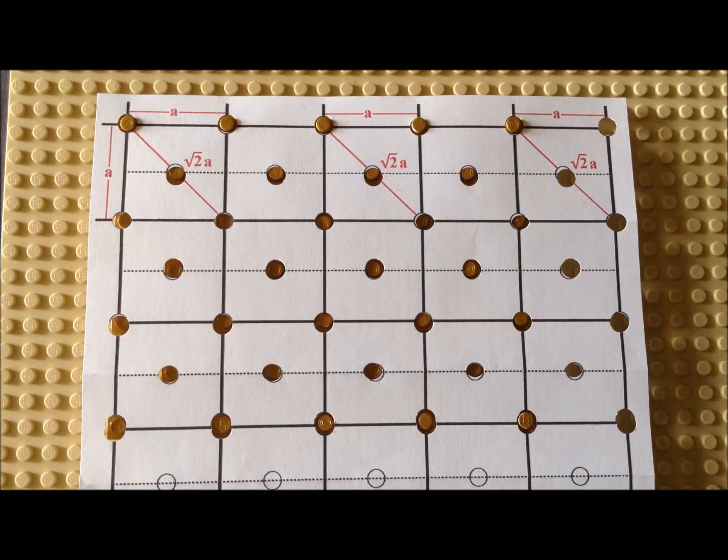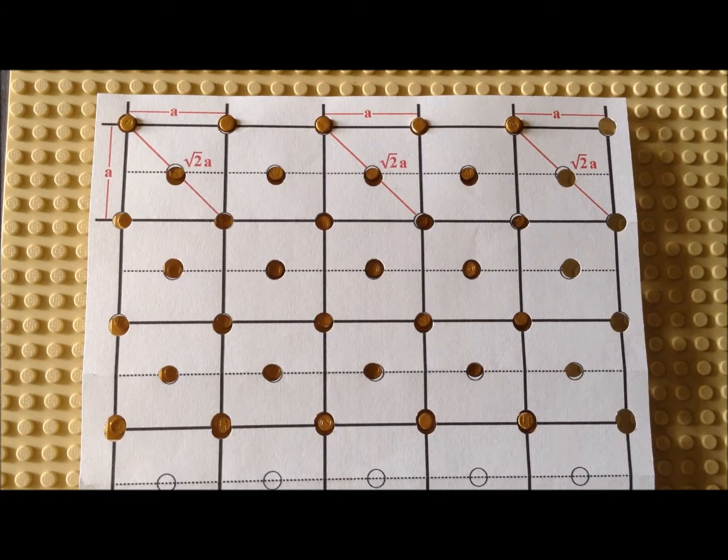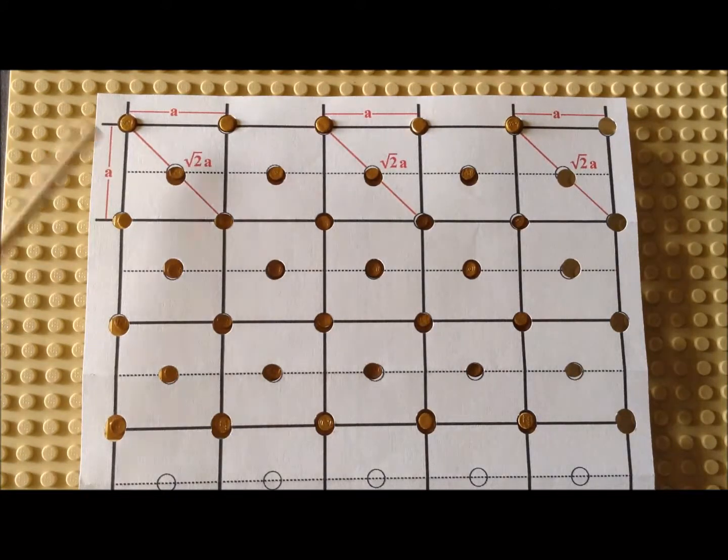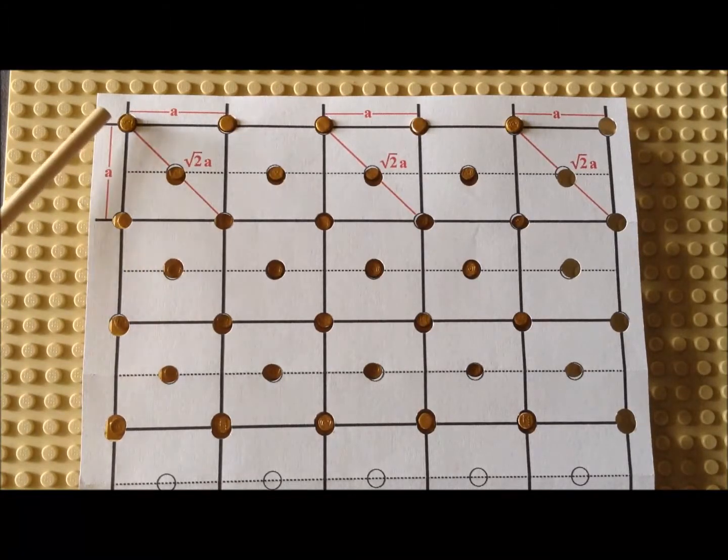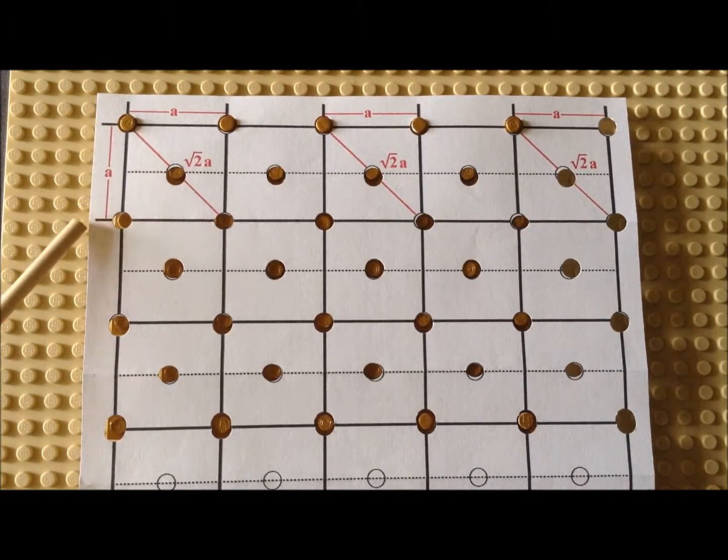Here we have figure 7, pattern 7, overlaid on the FCC 100 structure. And here we see the dimensions of the unit cell. So defined this way, the edge length is a.